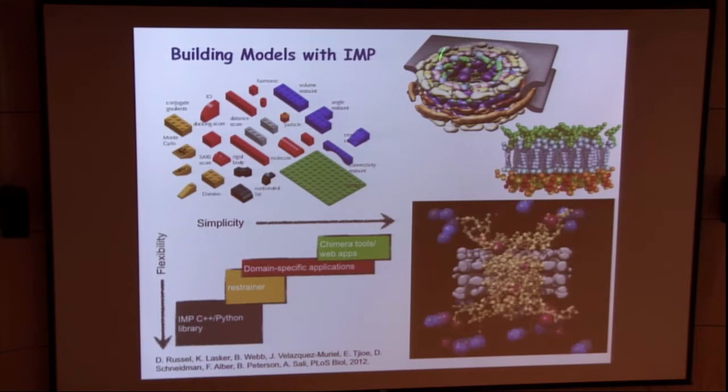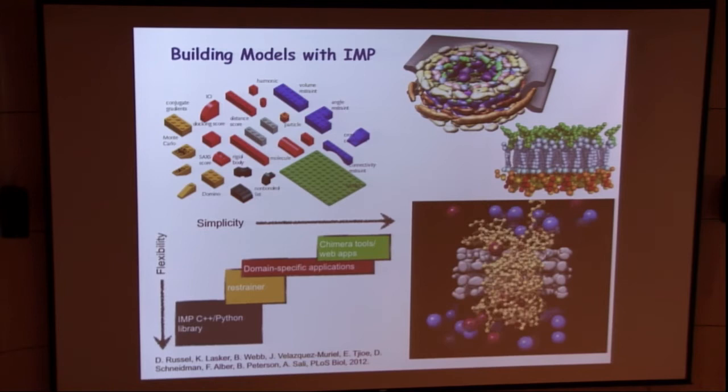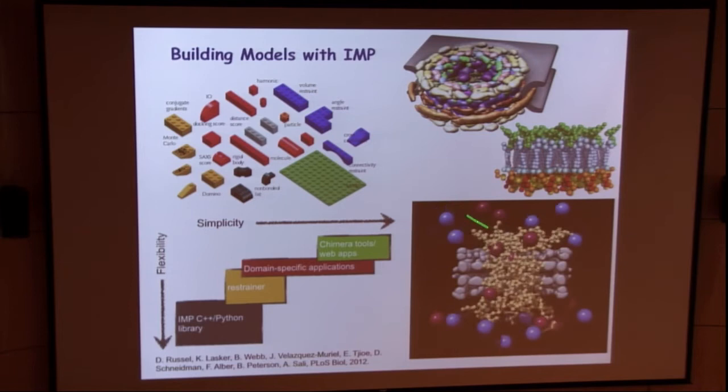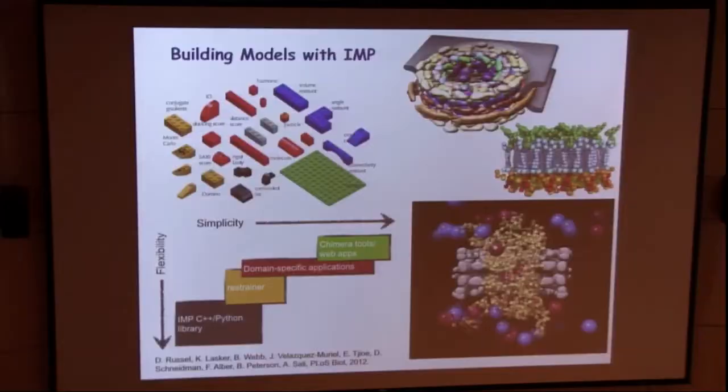And depending on the level of detail and scale that you want, it may be necessary to do things at a very low level, or it may be possible to do things at a much higher level. And this green box represents the Chimera tools and web applications in this spectrum of integrative modeling.